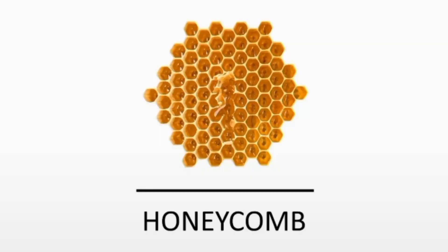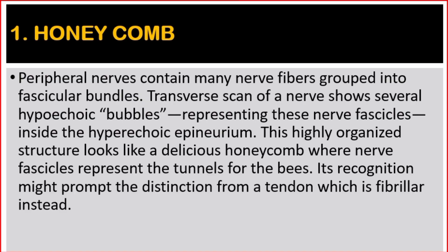Number one: honeycomb. Peripheral nerves contain many nerve fibers grouped into fascicular bundles. Transverse scan of a nerve shows several hypoechoic bubbles representing these nerve fascicles inside the hyperechoic epineurium. This highly organized structure looks like a delicious honeycomb, where nerve fascicles represent the tunnels for the bees. Its recognition might prompt the distinction from a tendon, which is fibrillar instead.